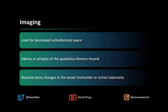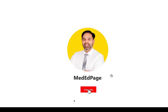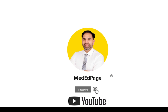On imaging, we're looking for the decreased ischiofemoral space — again, around 13 millimeters. Often we'll see edema or atrophy of the quadratus femoris muscle. You may also get reactive bony changes in both the ischiotuberosity or the lesser trochanter. That, in a nutshell, is what we talk about when we discuss ischiofemoral impingement. Thank you so much for your attention — tune in next week for another high-yield MSK unknown case.